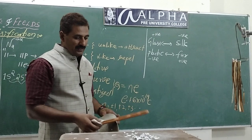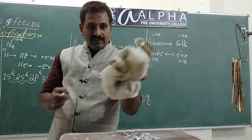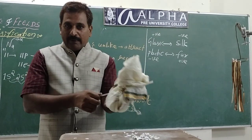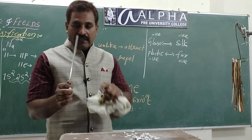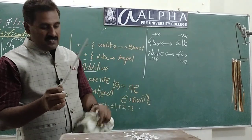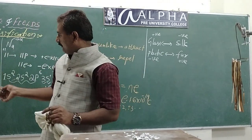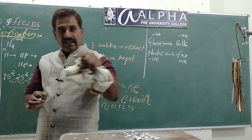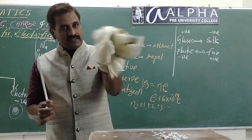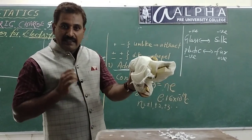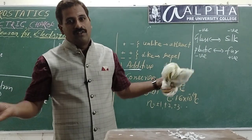Similarly, when you rubbed the glass rod with silk — I explained this in the last class — the atoms of glass lose their valence electrons, which are collected by the silk. Therefore, silk gets negative charge and glass rod gets positive charge. This is the reason. That is all.